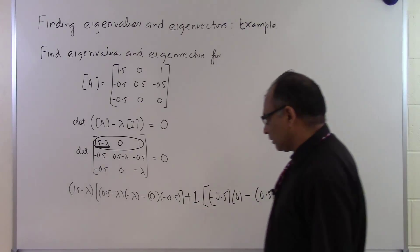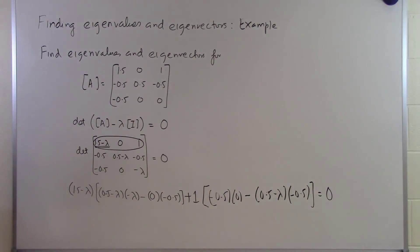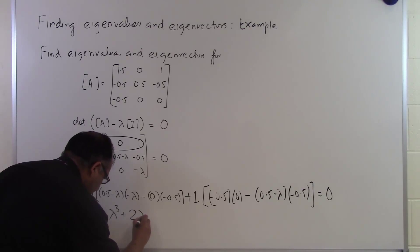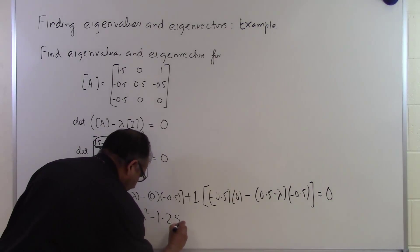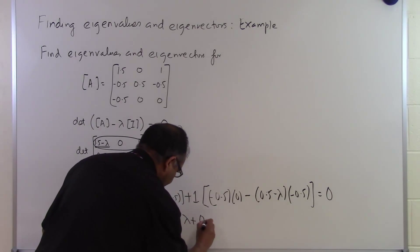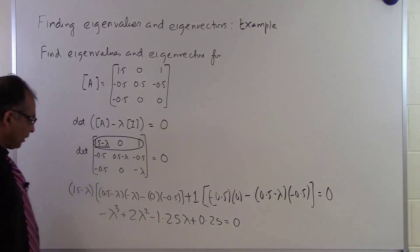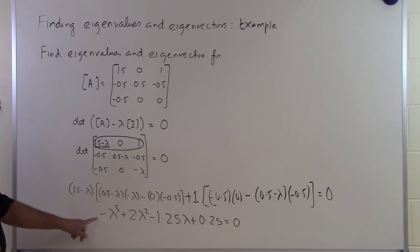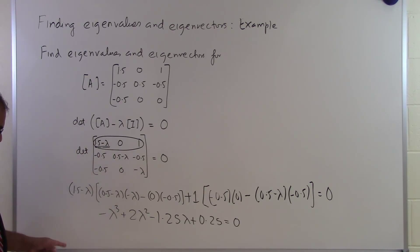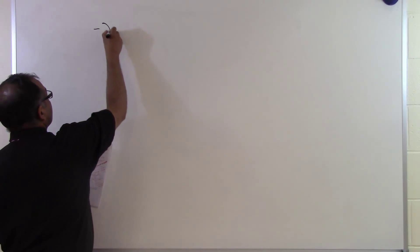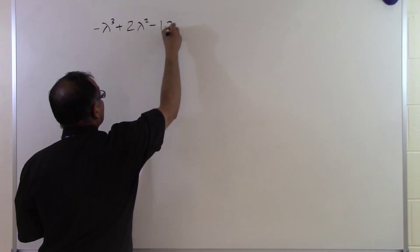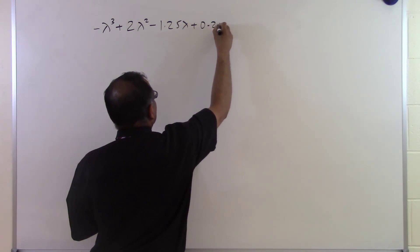And that will be equal to 0. So if I do the expansion of all this, I'm going to get: minus lambda cubed plus 2 lambda squared minus 1.25 lambda plus 0.25, equal to 0. That's the cubic equation I expect, since lambda appears in each diagonal entry.